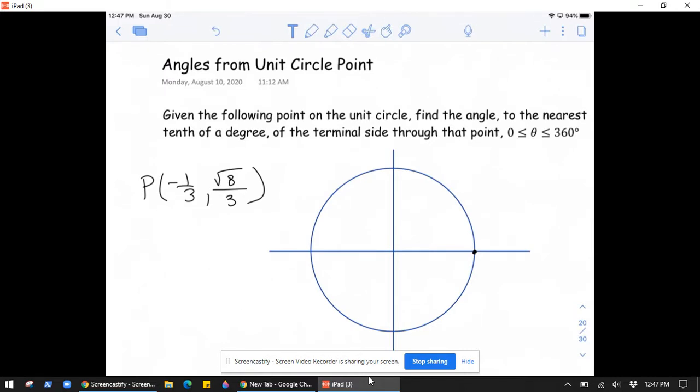So it says, given the following point on the unit circle, find the angle to the nearest tenth of a degree of the terminal side through the point. And we only want the angle that's in between 0 and 360 degrees.